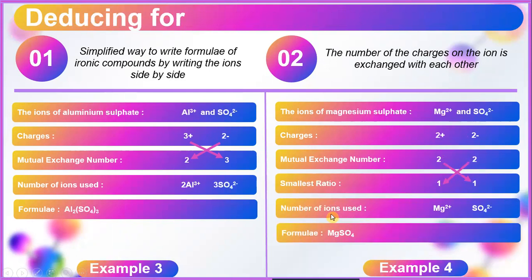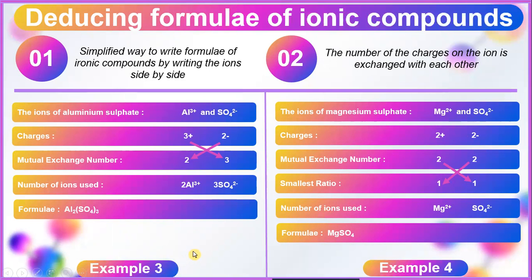Let's move on to Example 3 for aluminium sulfate. Aluminium sulfate is Al³⁺ and SO₄²⁻. The charge of aluminium is 3+ and for sulfate SO₄²⁻ the charge is 2−. By mutual exchange, 3 positive becomes 3 for sulfate and 2 negative becomes 2 for aluminium. So the number of ions used: aluminium gets 2, giving 2Al³⁺, whereas for sulfate we get 3SO₄²⁻. When we write the formula for aluminium sulfate it becomes Al₂(SO₄)₃.